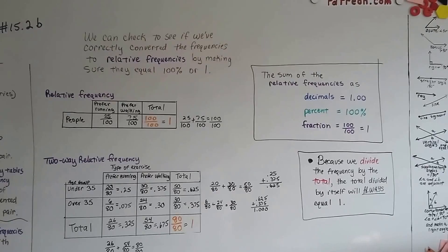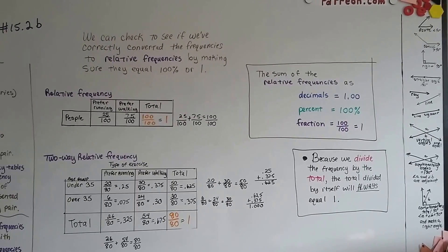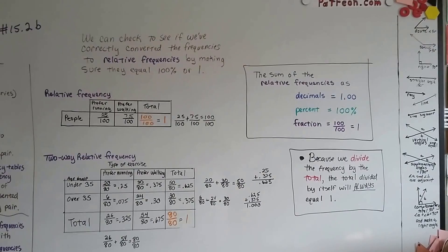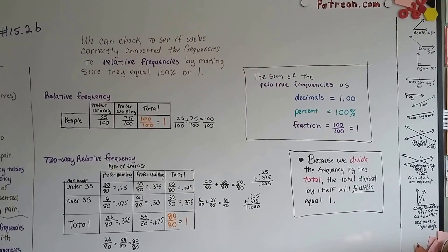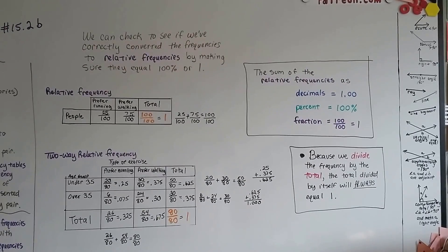So that's how they should equal 1 or 100%. And we're going to talk more about these tables in the coming up video. We're going to do a frequency table in 15.2c. I hope I'll see you there. Bye.